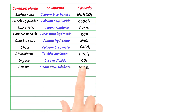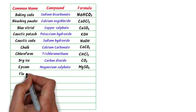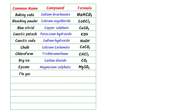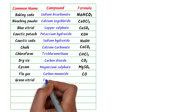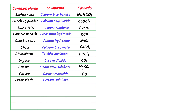The tenth is flue gas — it is carbon monoxide and its chemical formula is CO. The eleventh is green vitriol — it is ferrous sulfate and its chemical formula is FeSO4. The twelfth is gypsum — it is calcium sulfate and its chemical formula is CaSO4.